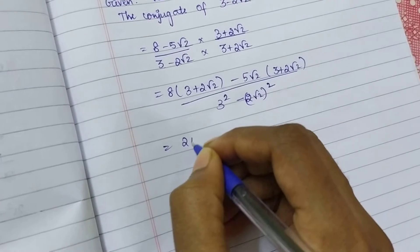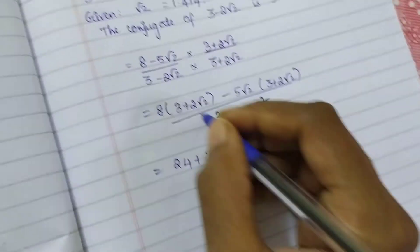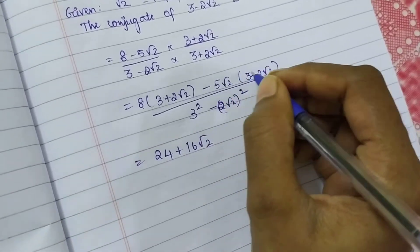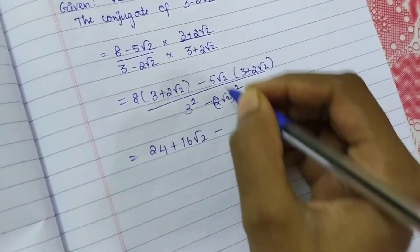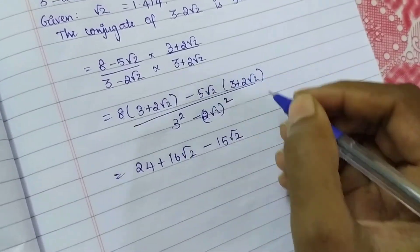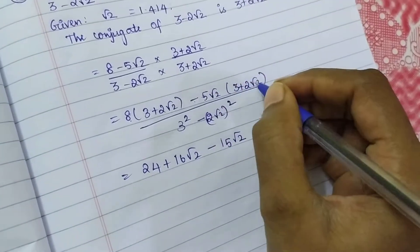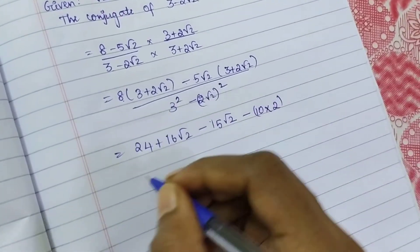So, 8 times 3 is 24, 8 times 2 is 16 root 2. Minus into plus minus, 3 times 5 is 15 root 2. Minus into plus minus, 5 times 2 is 10 into 2, root 2 into root 2.